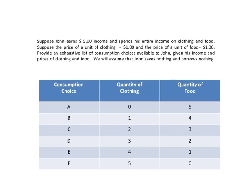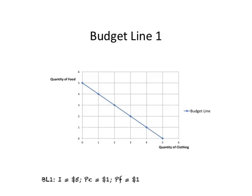We used an example about a consumer called John who earns five dollars income and spends his entire income on clothing and food. We assumed the price of clothing is one dollar and the price of food is also one dollar, and this person saves or borrows nothing. Based on this, we made an exhaustive list of consumption choices available to John and drew a budget line.